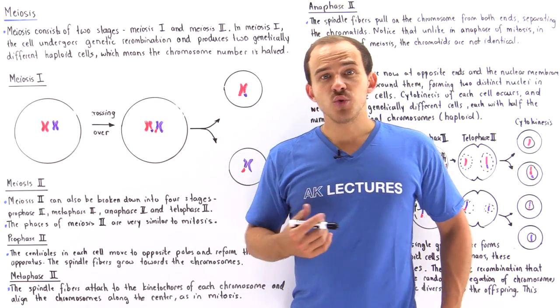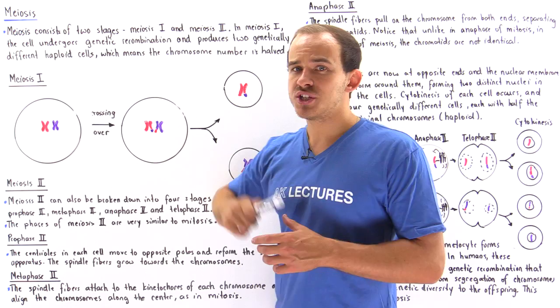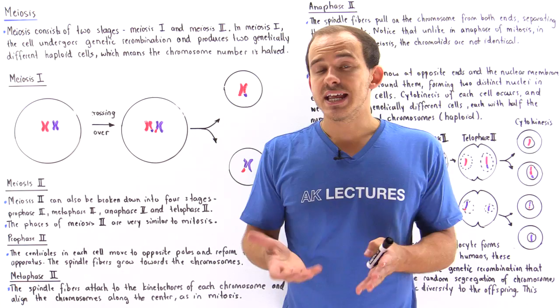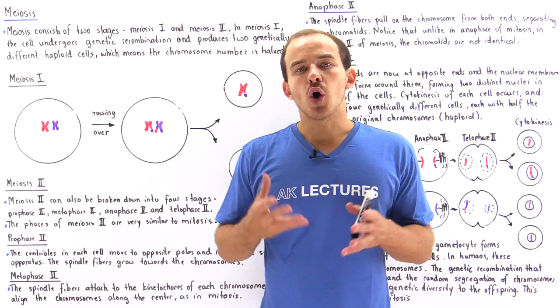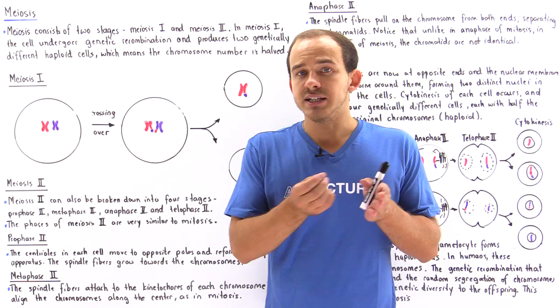Meiosis is a type of cell division that consists of two stages: meiosis 1 and meiosis 2. Previously we discussed meiosis 1 and said that in meiosis 1 the cell undergoes a genetic recombination process known as crossing over, and the cell basically divides into two genetically different haploid cells.